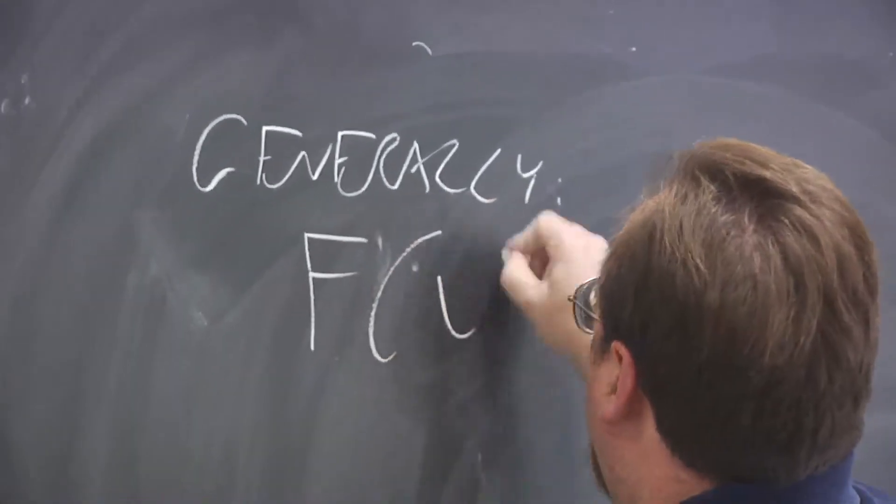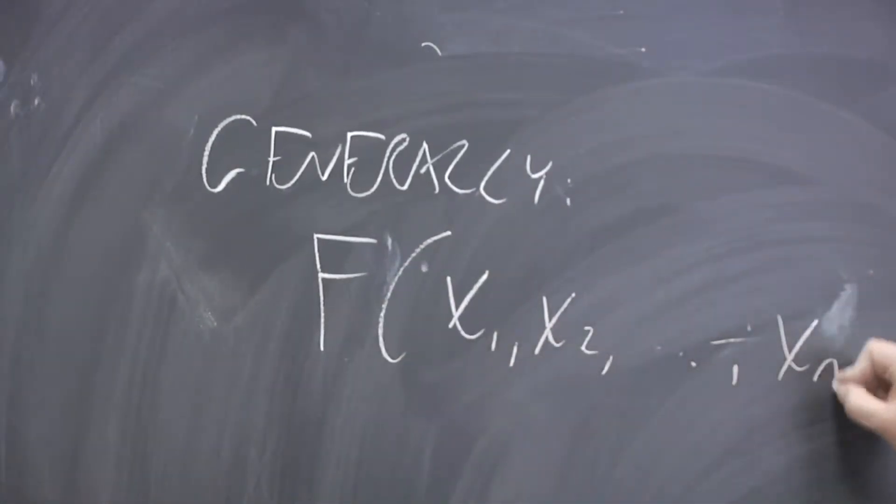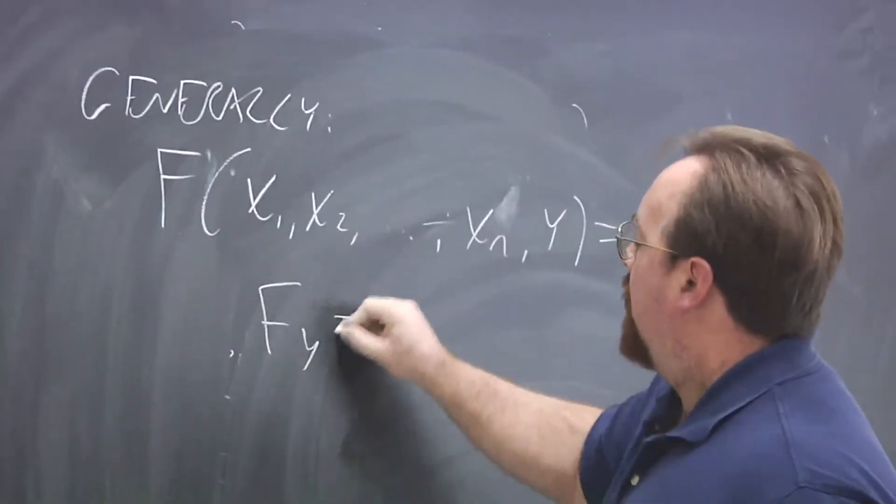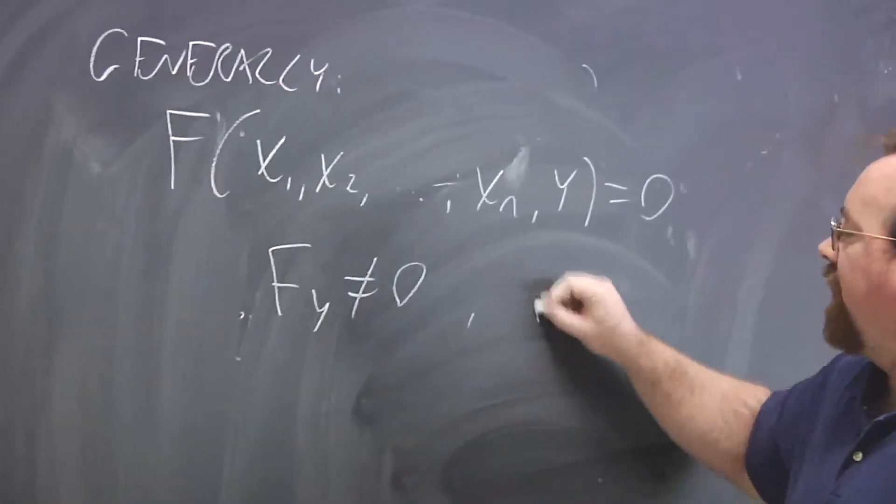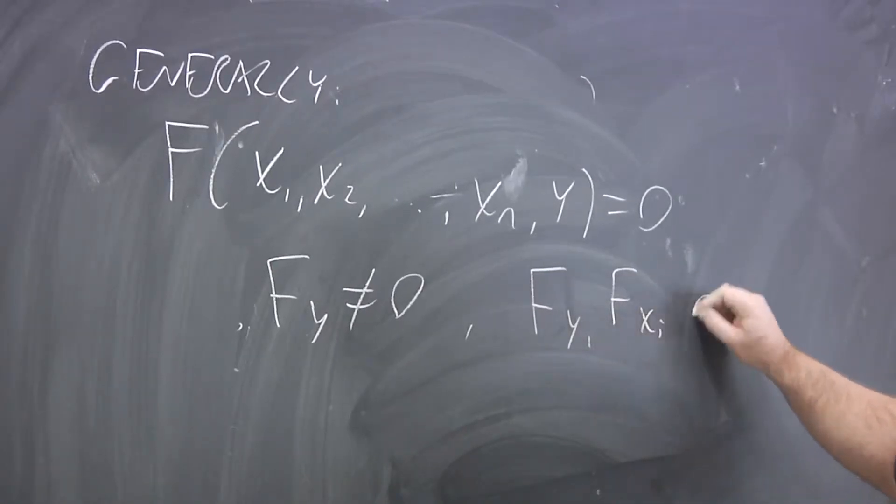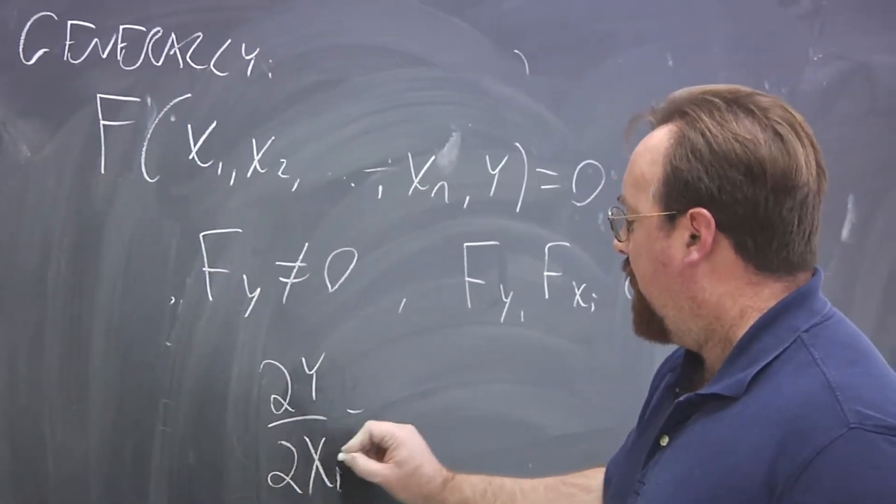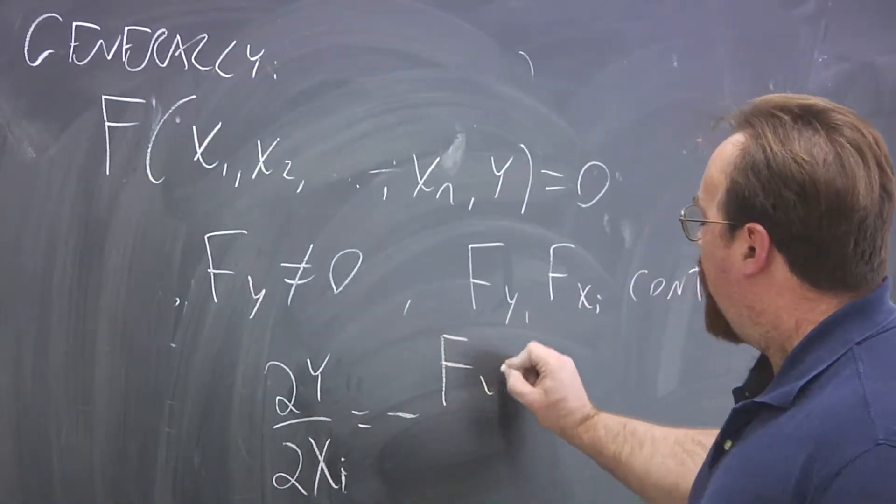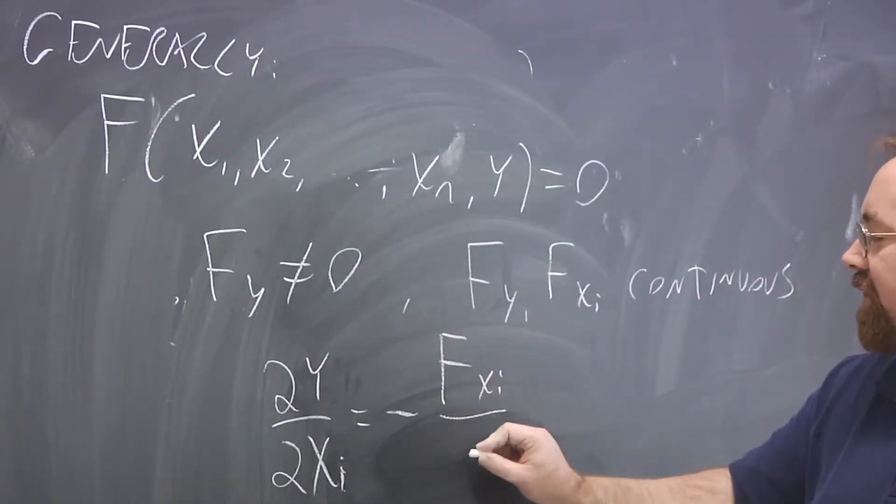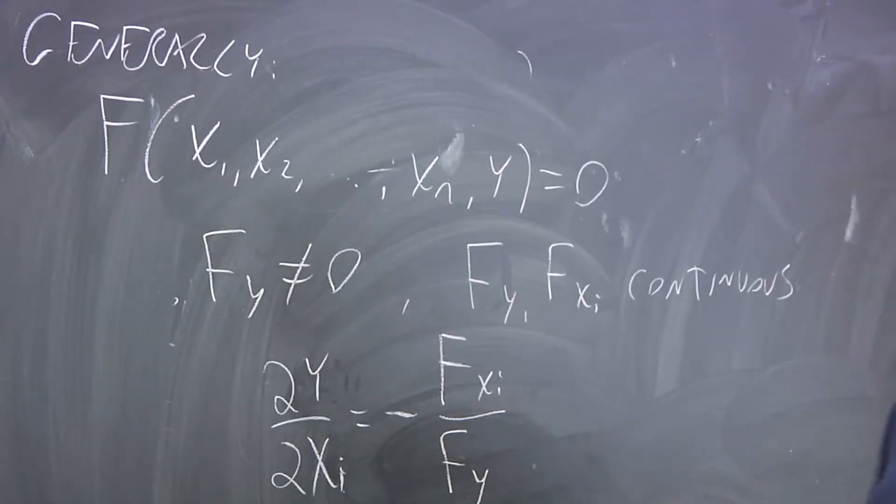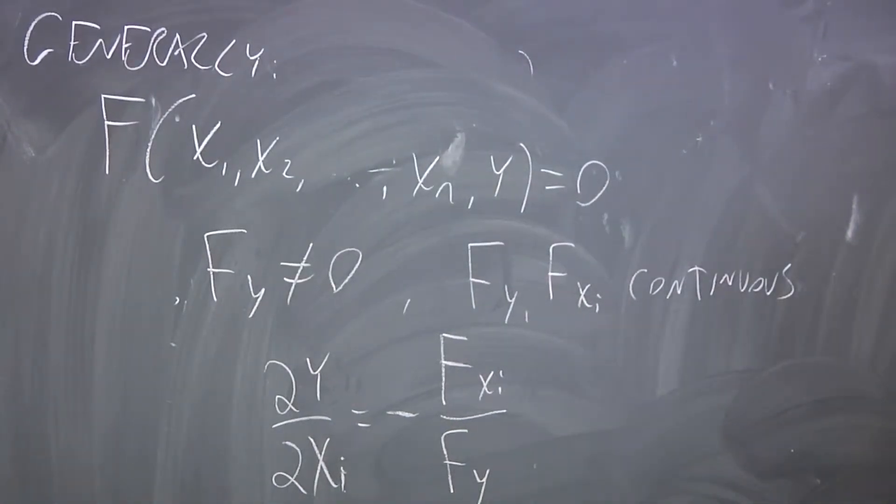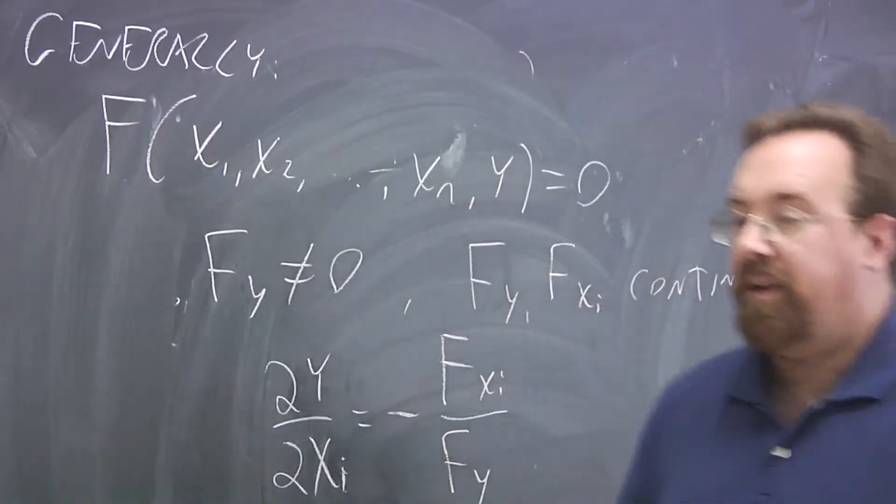A little more generally, you have F of X1, X2, Xn, Y is equal to zero. So, here we have a function of N plus one variables, and FY is non-zero, and all of these partial derivatives are continuous. Then, partial of Y with respect to any of the X's is minus partial of F with respect to that X over partial of F with respect to Y. So, that's the more general form for any number of independent variables.